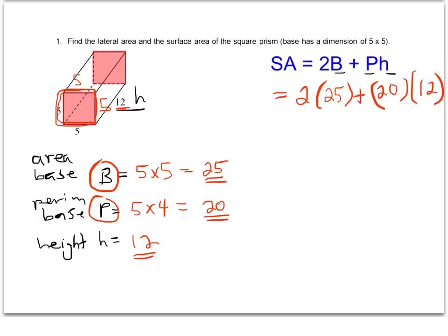There are two separate terms here that we have to simplify before we add them together. Basic order of operations. And so we're going to multiply each of those separately. 2 times 25 is 50, and then 20 times 12 is 240.